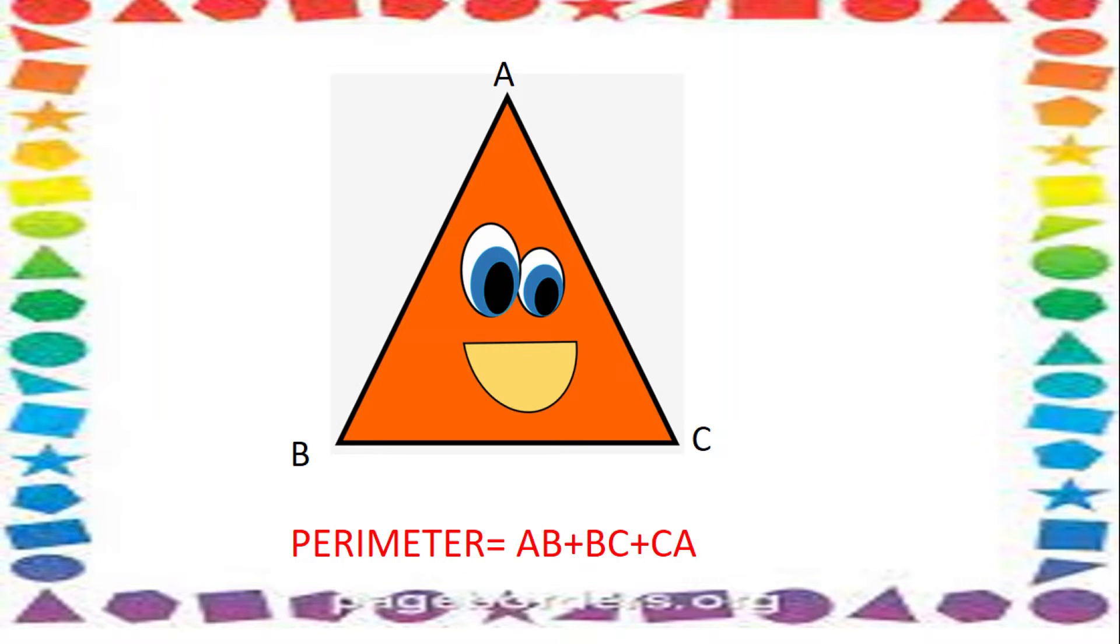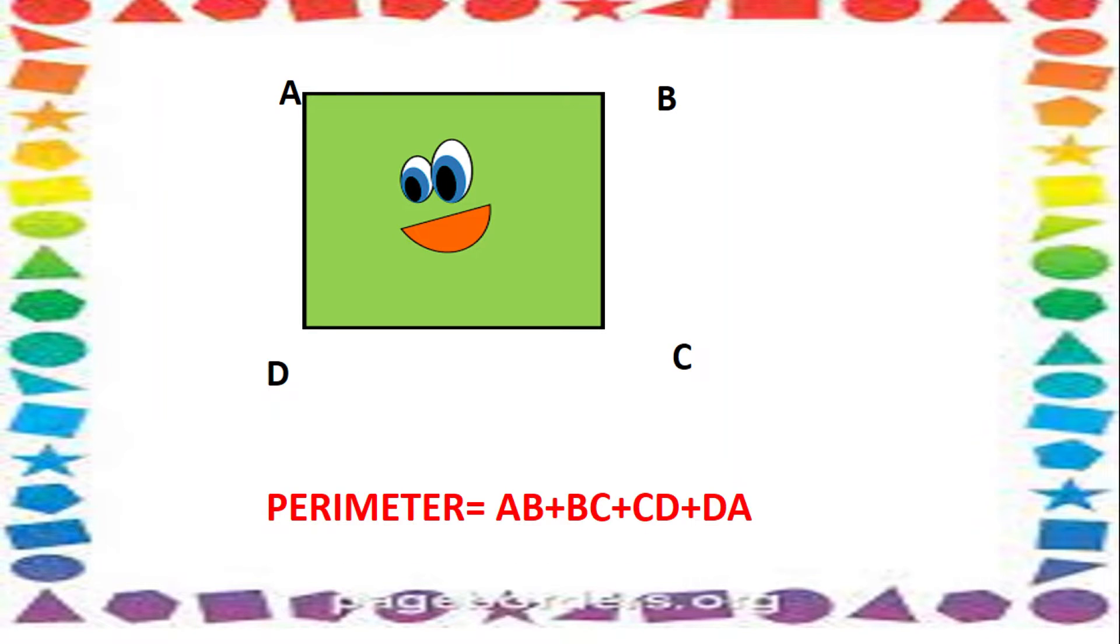Now, if we have a square, perimeter is equal to AB plus BC plus CD plus DA. First of all, we have to mark the points. Then we have to add.